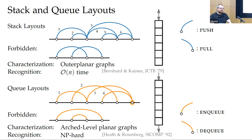Another direction, as Sergei mentioned, is to look at the number of pages. You assign colors to edges, and only between edges of the same color are the forbidden configurations prohibited. The question is how many colors you need — that's called pages. But we will stick with one page.